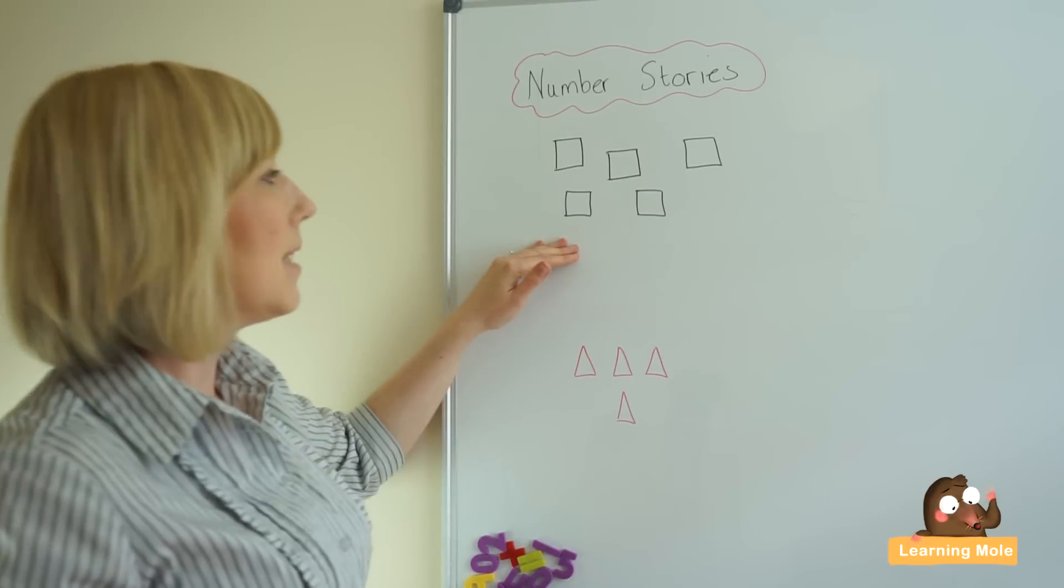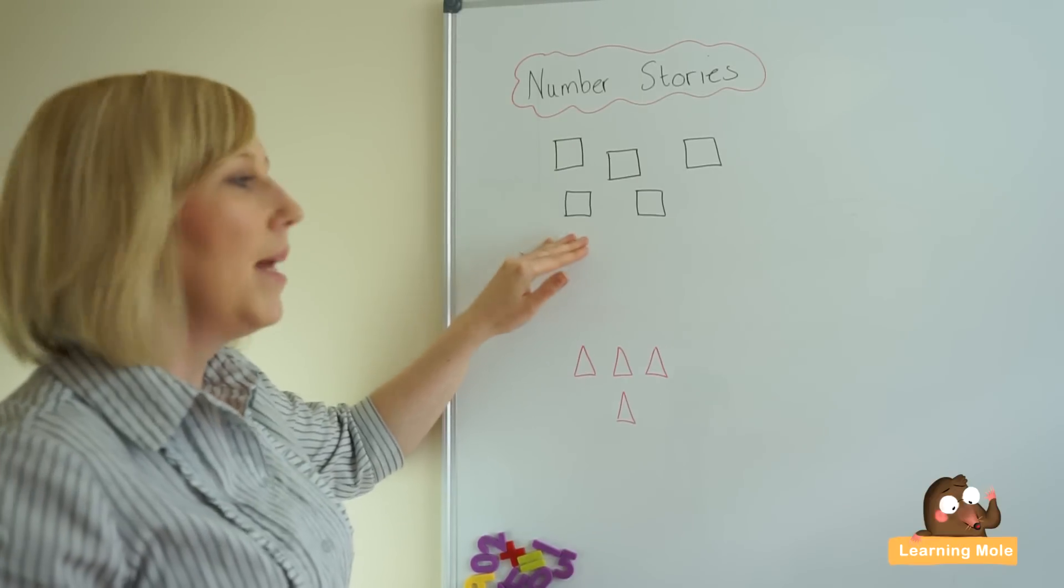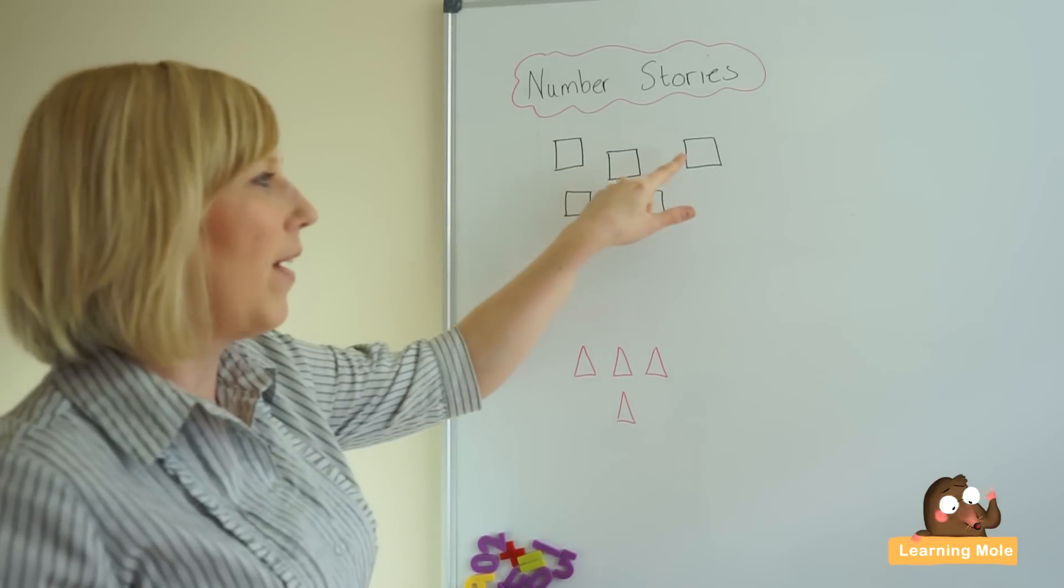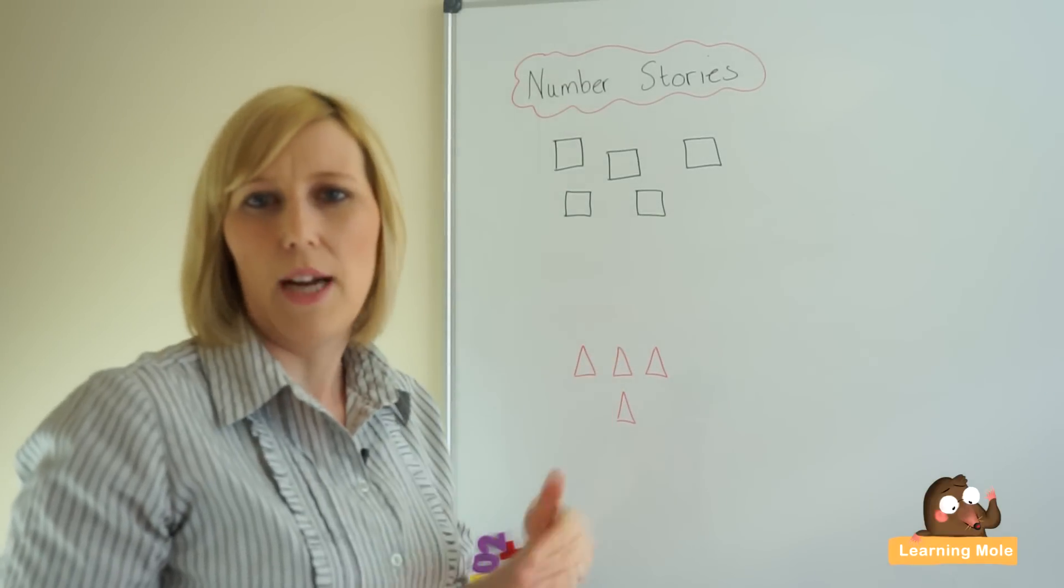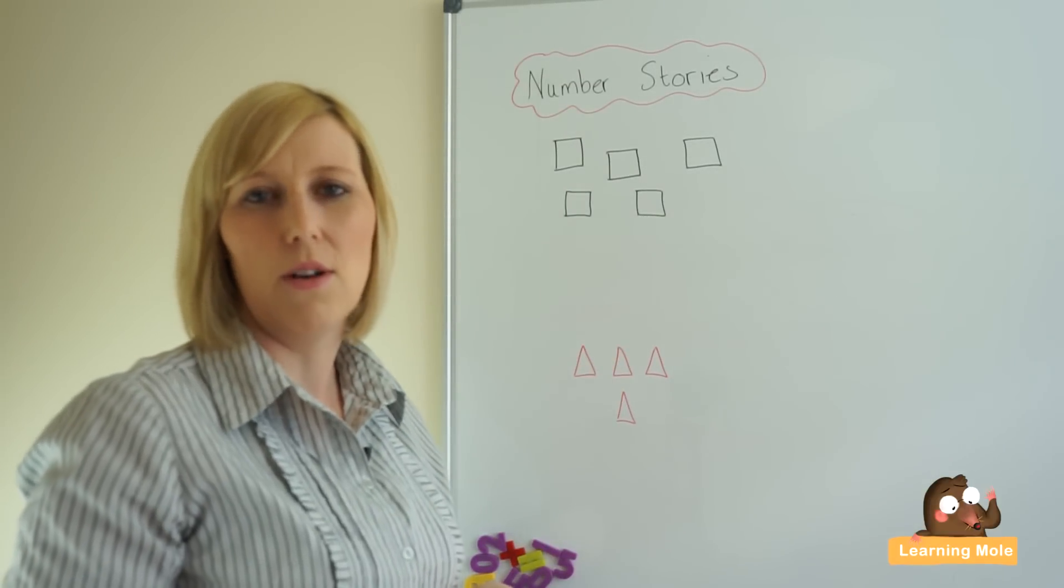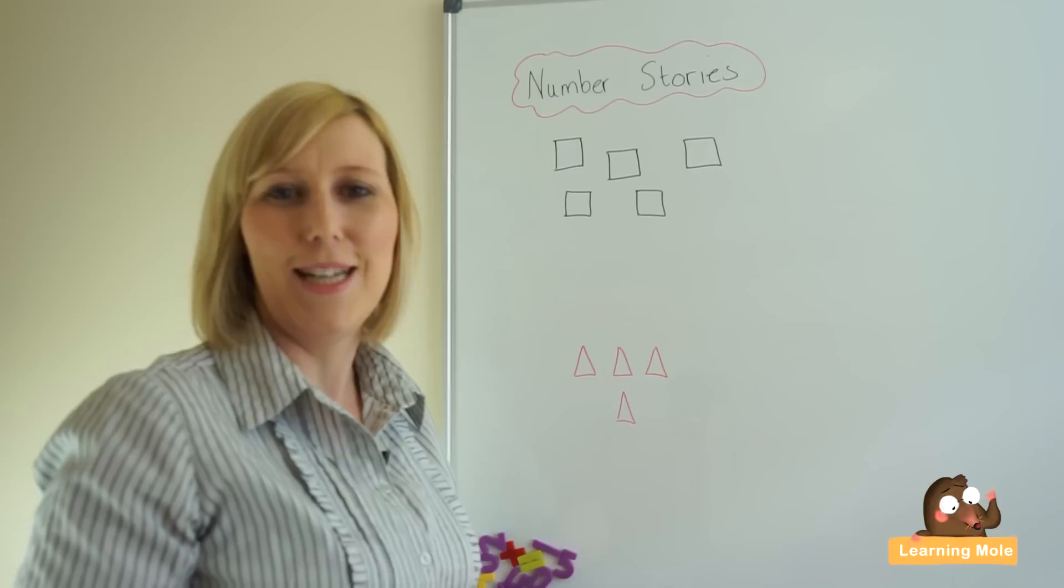So for example, I might say to my child this time that I have got five: one, two, three, four, five. Five what? What shapes are these? And hopefully your child will tell you squares or rectangles, obviously depending on your drawing and your accuracy.